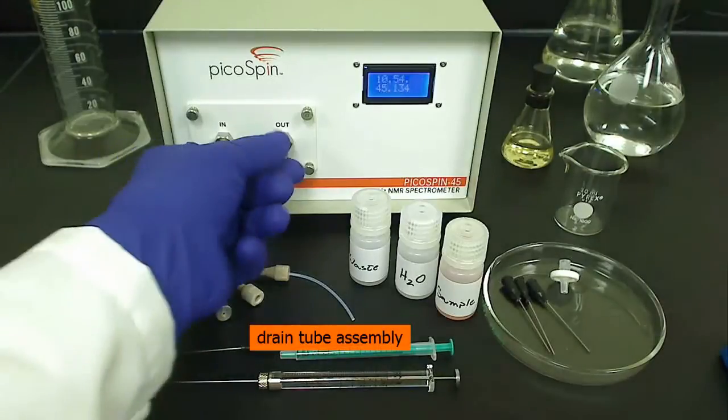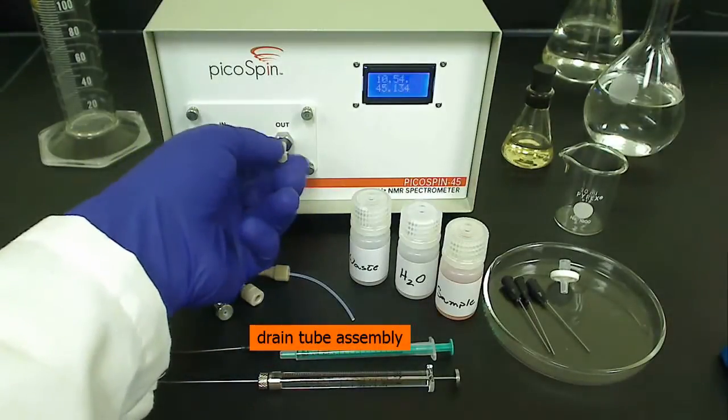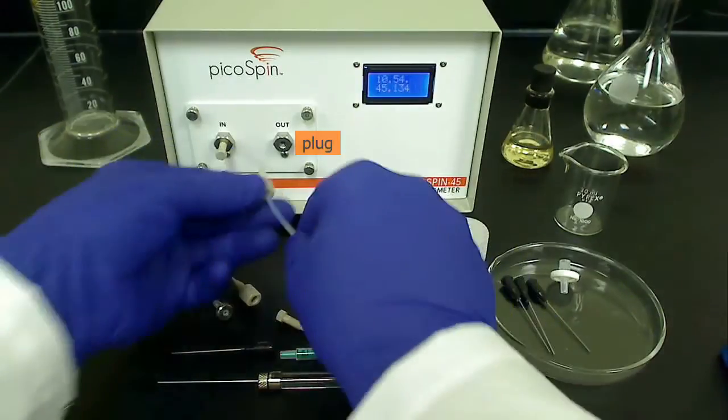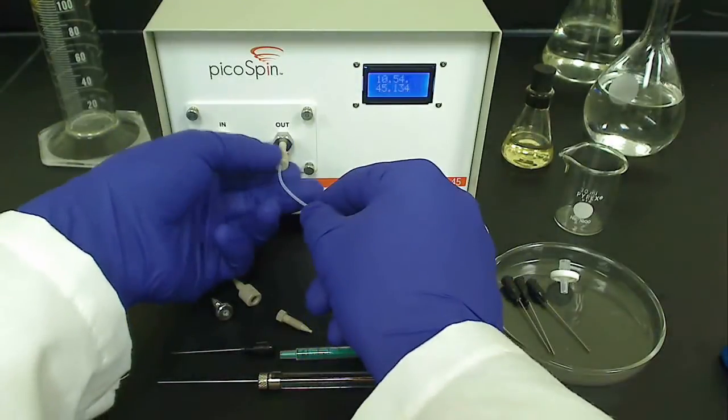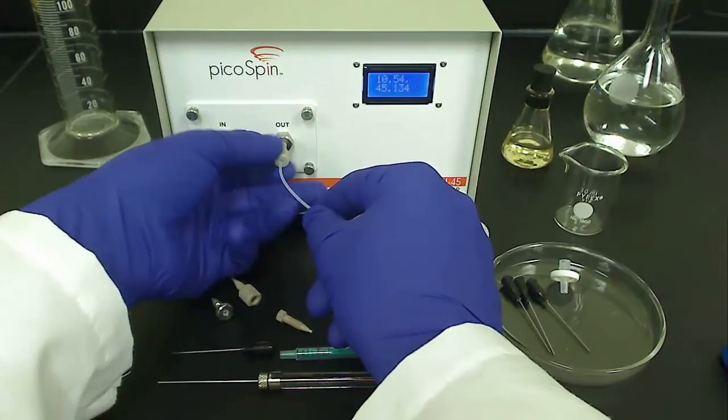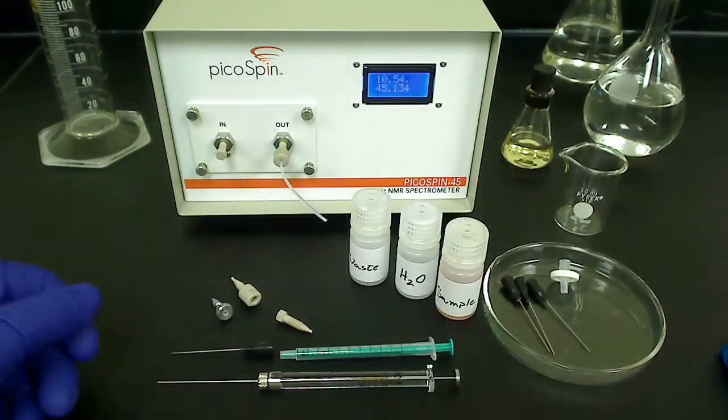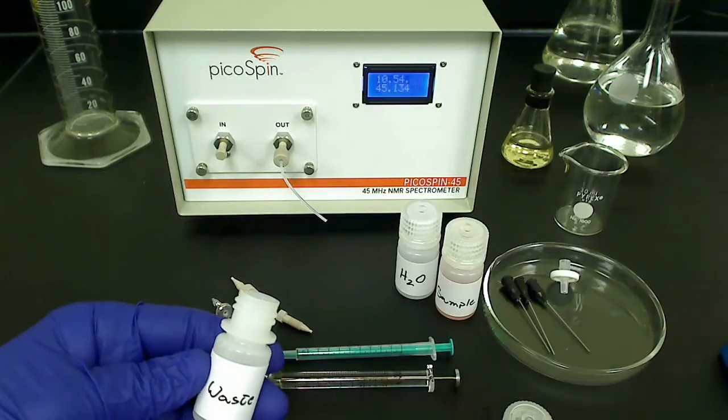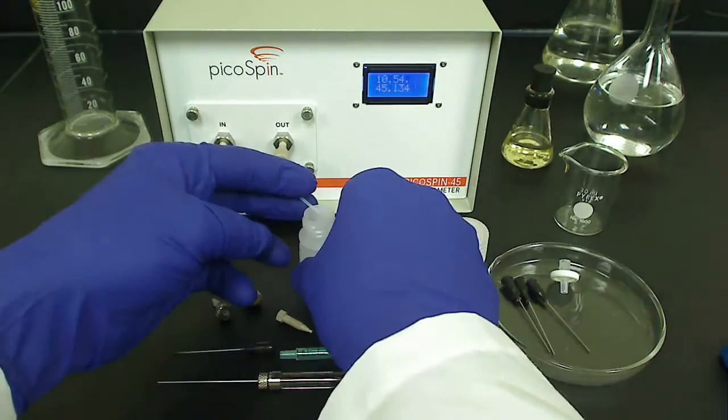The first thing we need to do is attach the drain tube assembly. We'll remove the plug in the outlet fitting and screw in the drain tube until finger-tight. I like to orient the drain tube sideways so the tubing can sit on the rim of the waste collection bottle. This will allow us to observe liquid droplet formation at the exit as we inject our sample.